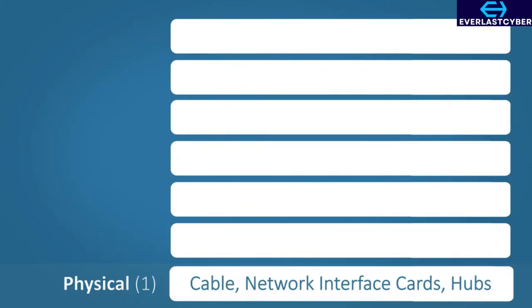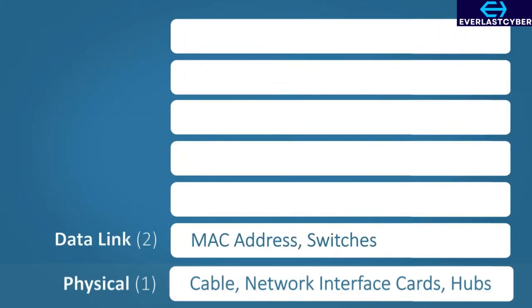Let's take a look at the layers, starting from the bottom up. Layer 1 is the physical layer — the lowest layer of the OSI model. Its key responsibility is to carry the data across physical hardware like Ethernet cables. Layer 2 is the data link layer. At this layer, the physical addresses are added to the data — this is the source and destination MAC addresses. Switches are also located at this layer.